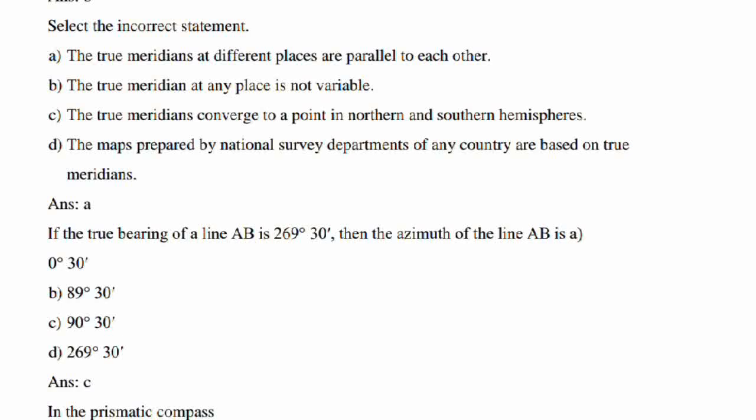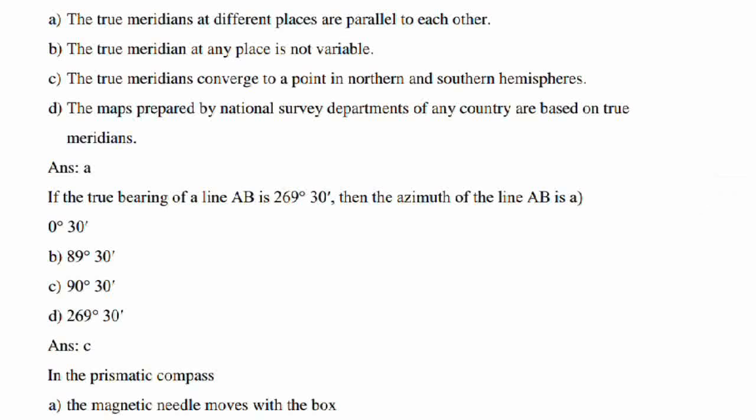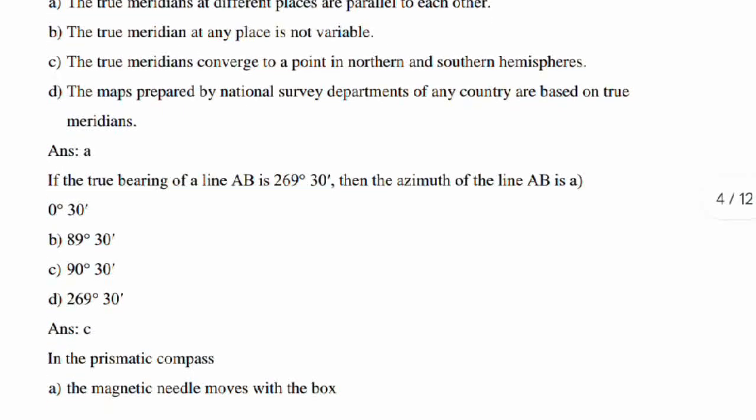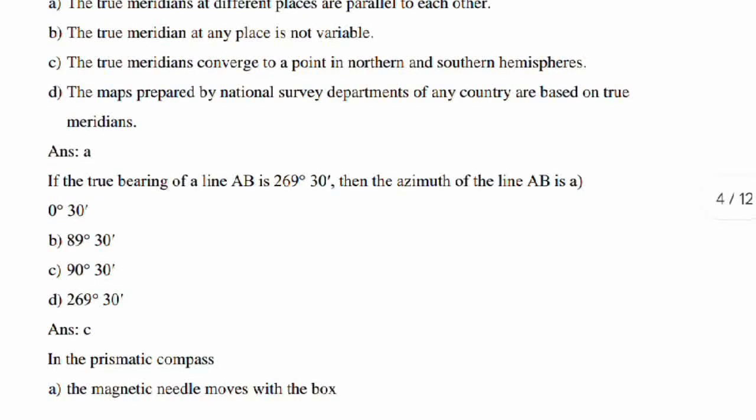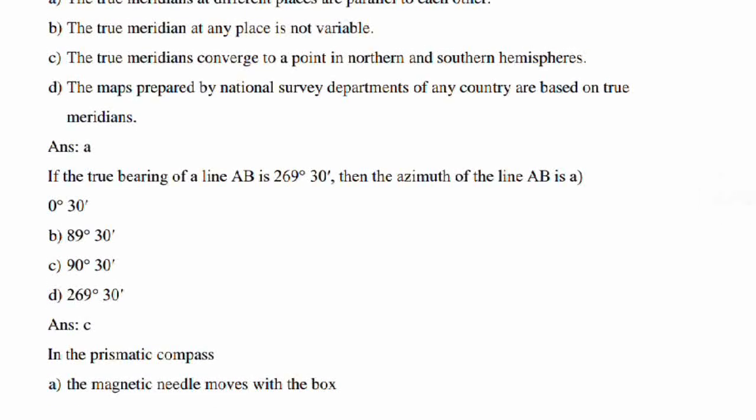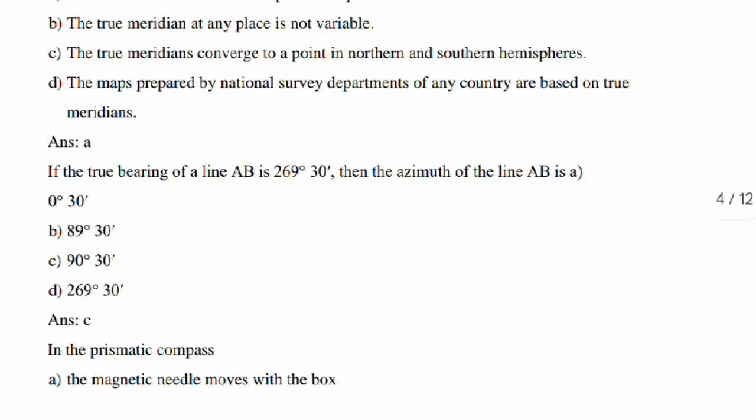What is the incorrect statement? That means option A is an incorrect statement. So other three options are true. The true meridian at any place is not variable. The true meridians converge to a point in northern and southern hemispheres. The maps prepared by national survey departments of any country are based on true meridians. So all these three except option A are correct statements.